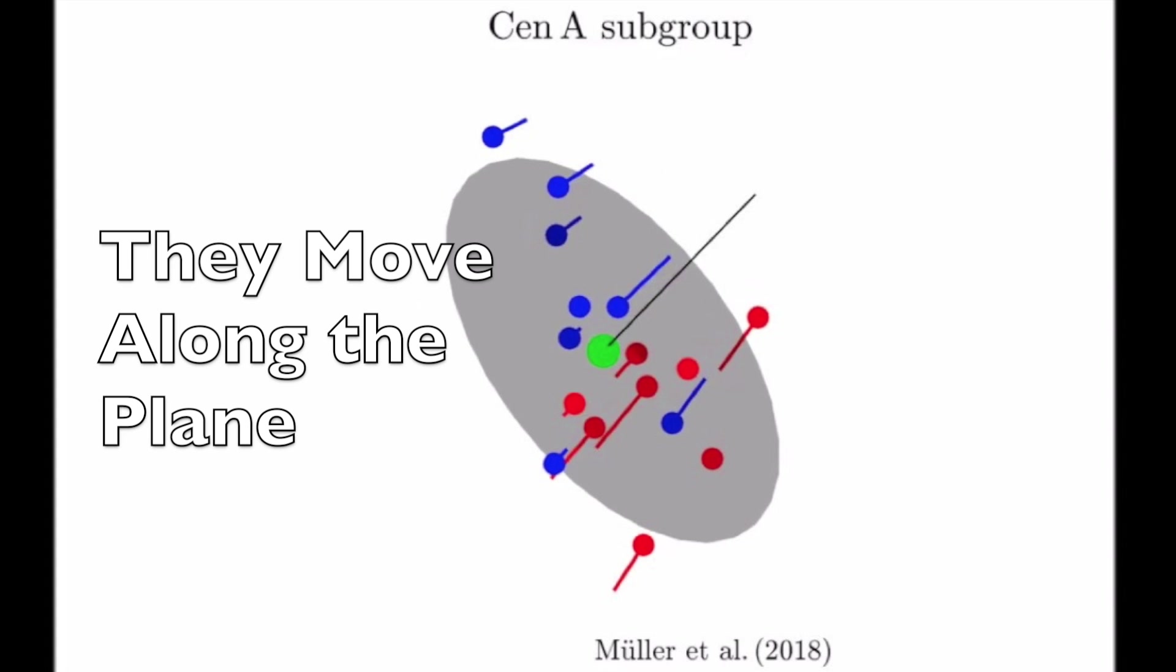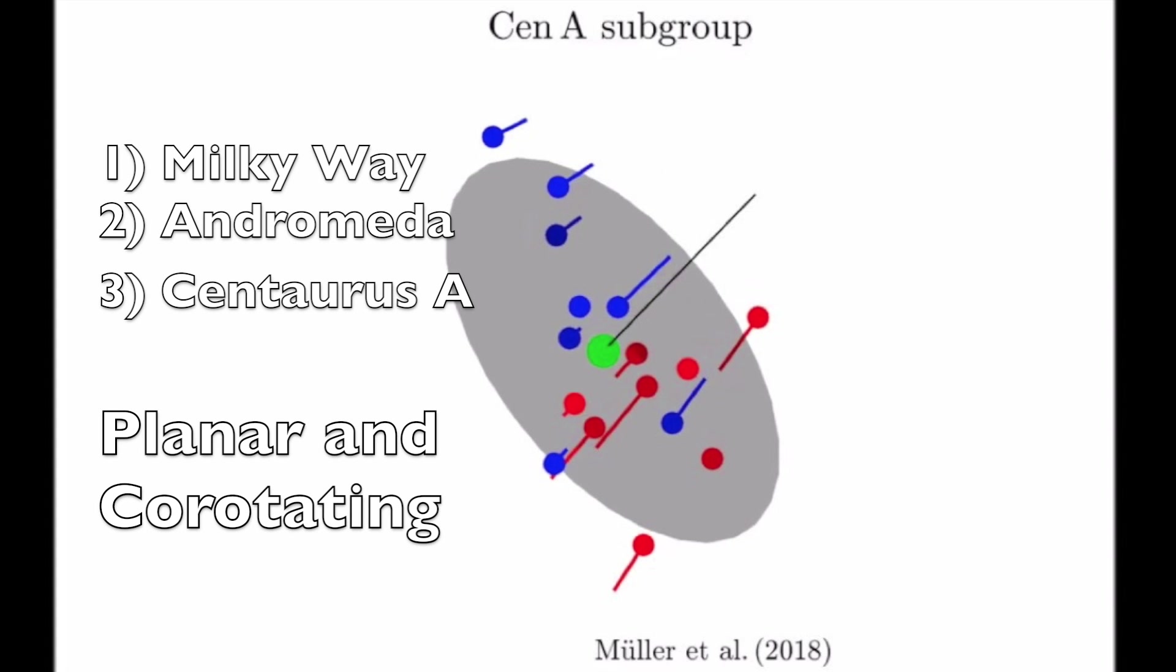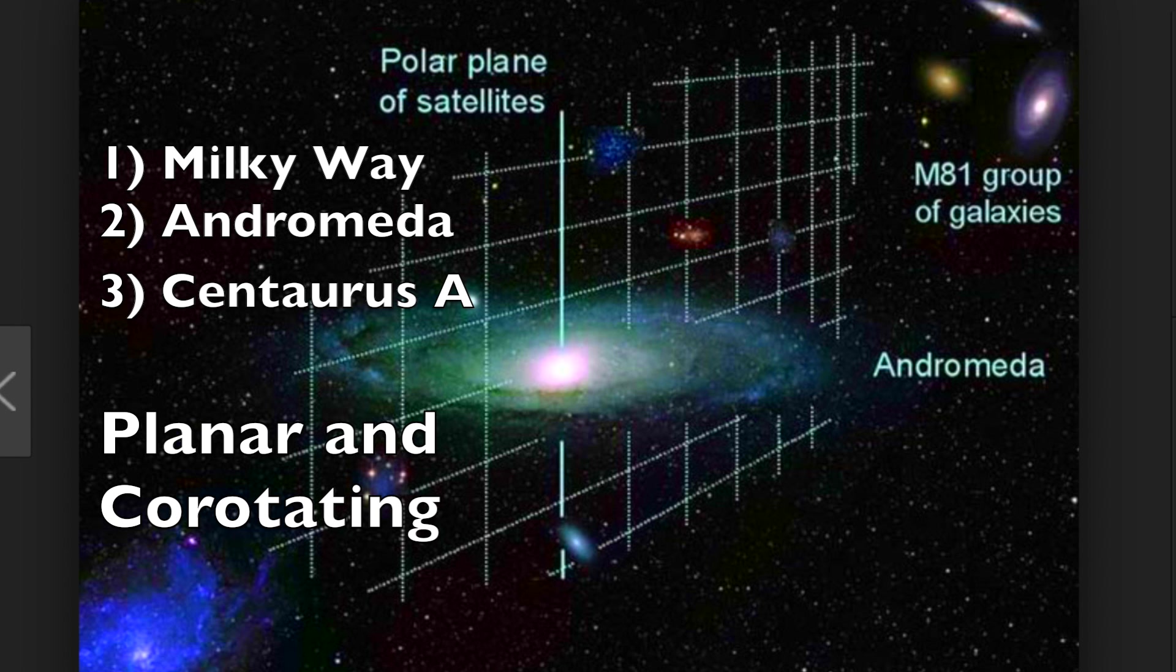We have this 3D information from the Milky Way. For Centaurus A, as well as for Andromeda, we only see one component of the velocity, but it's consistent with this picture of a rotating plane of satellite galaxies.